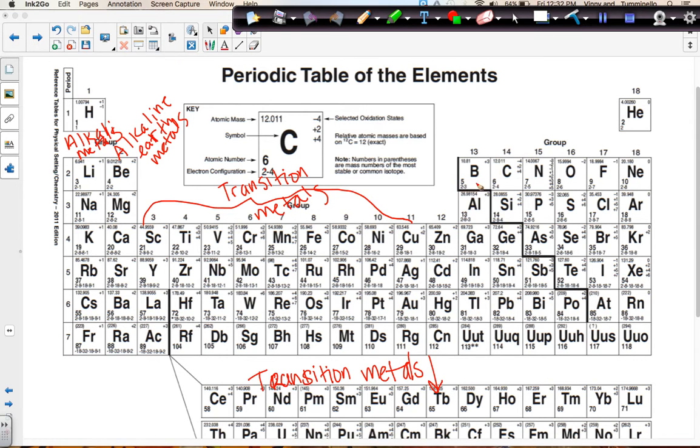When we get to 13, 14, 15, 16 they don't really have names. Sometimes we just call this the carbon group, the nitrogen group, the oxygen group. Group 17 are the halogens and group 18 including helium are the noble gases.